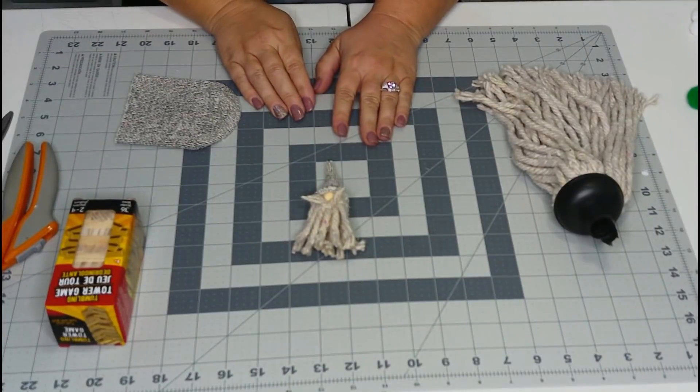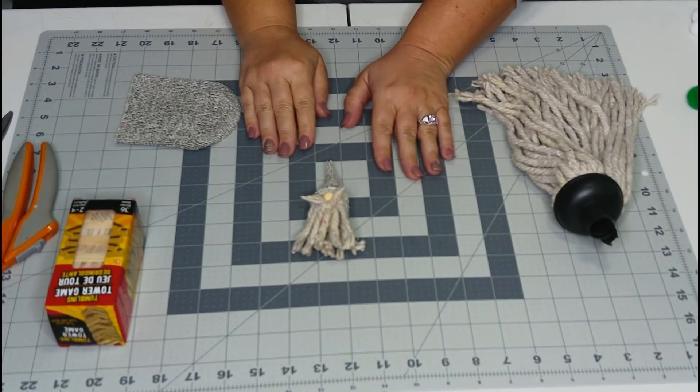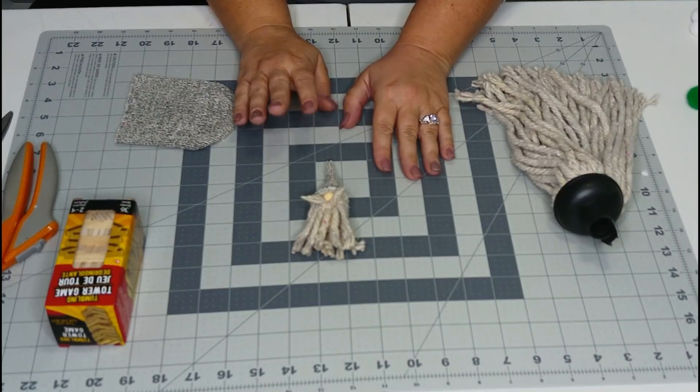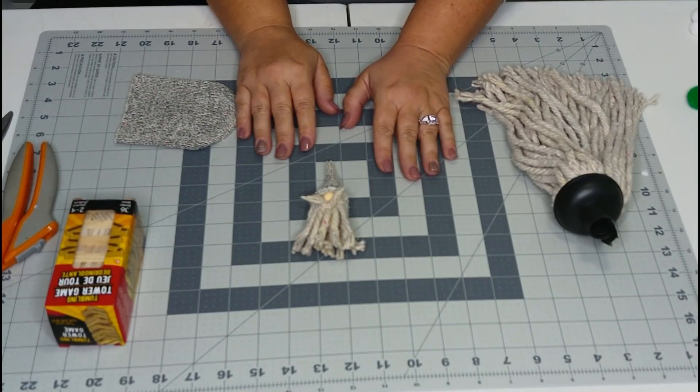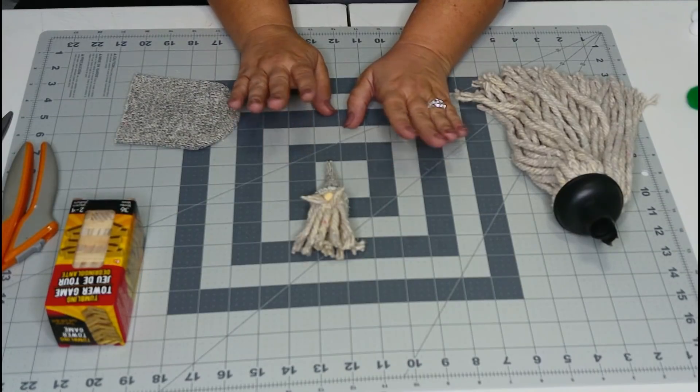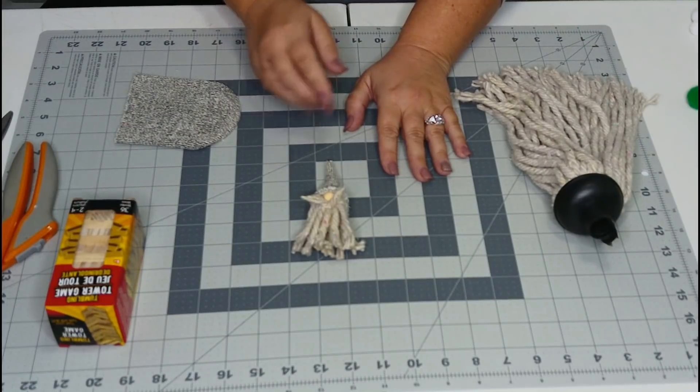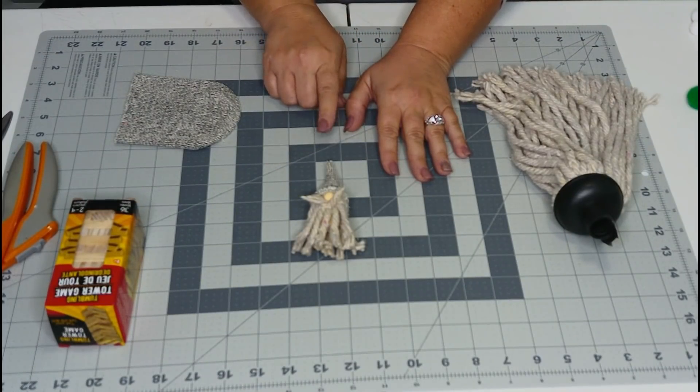So enough talking, let's get to DIYing and I hope y'all enjoy this video. For the next video in our Christmas Pottery Barn knockoff series I'm going to show you how to do the Pottery Barn gnome felt garland. Y'all, this felt garland retails for $39.95 on Pottery Barn's website and I'm going to show you how to do it with just a few things from the Dollar Tree.